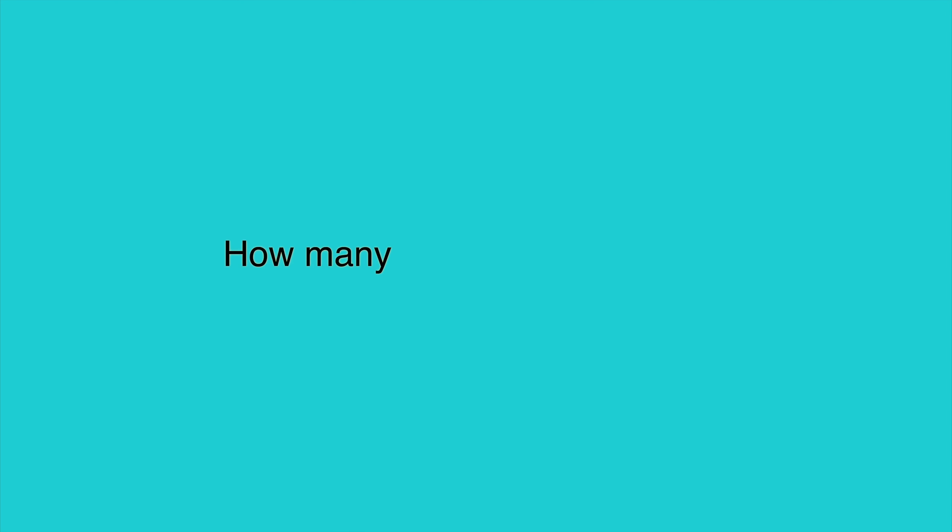Students count how many total chords they played. After the 30 seconds, the video asks your students how many chords they played and can they beat that score. The clock then restarts for another 30-second round. The repetition pretty much guarantees a higher score at the end of the next round.